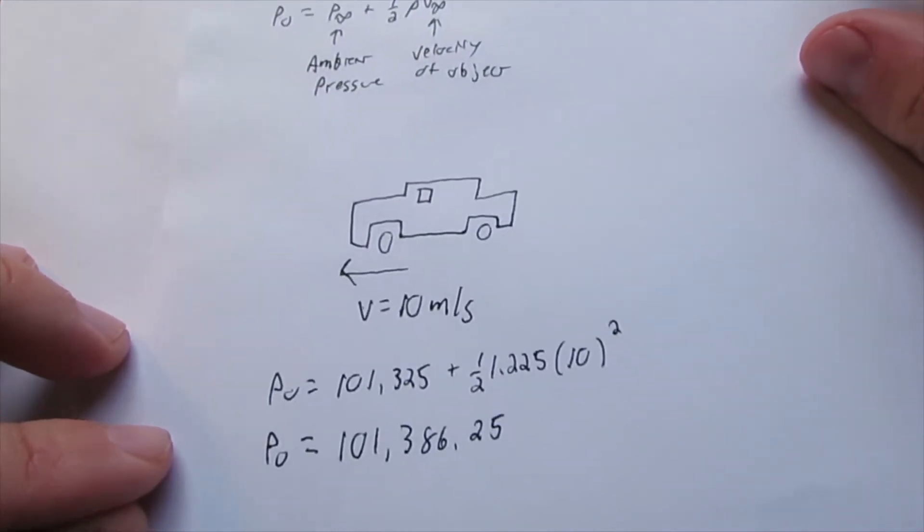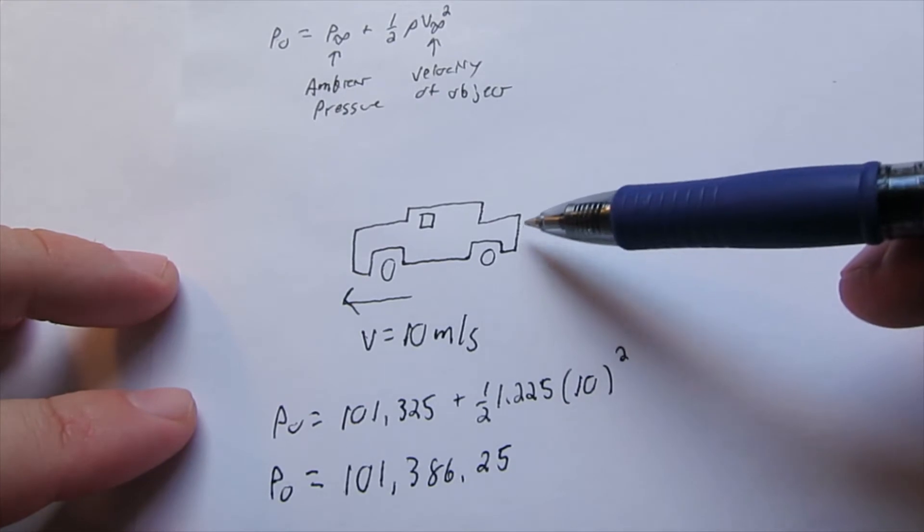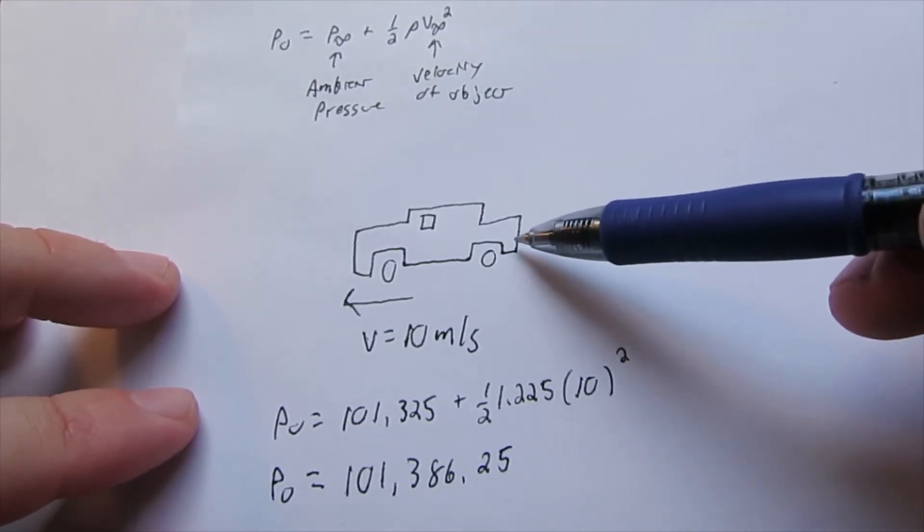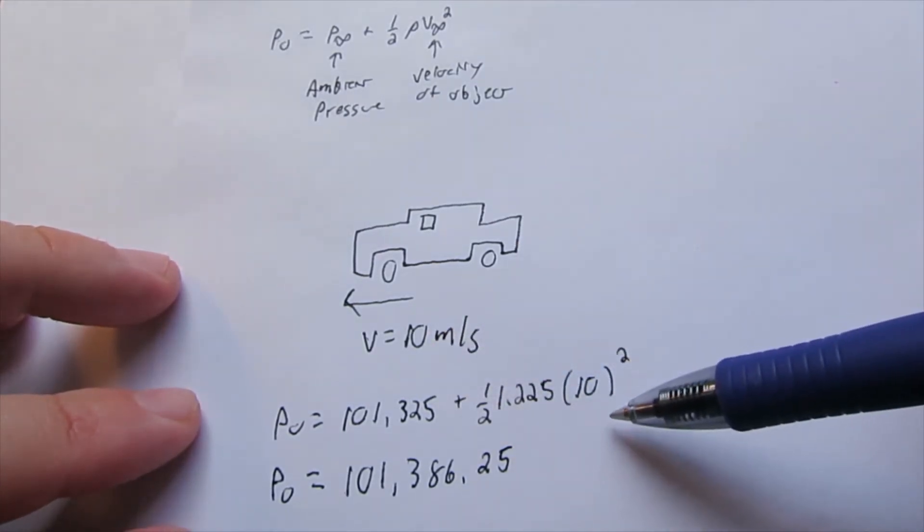For example, here's some sort of object moving through the air at 10 meters per second.